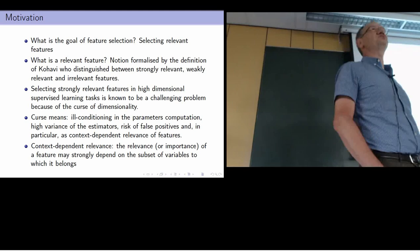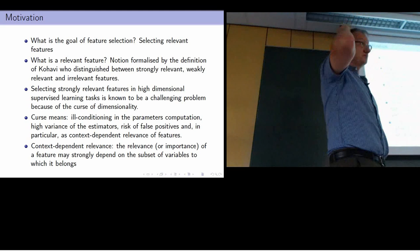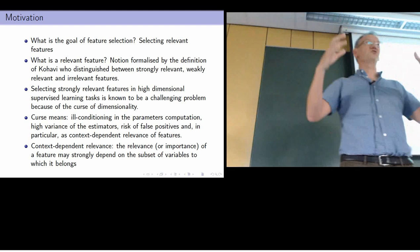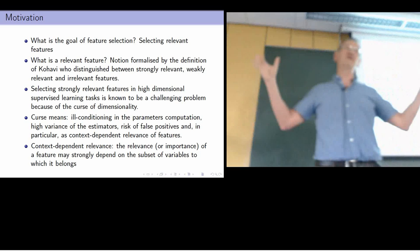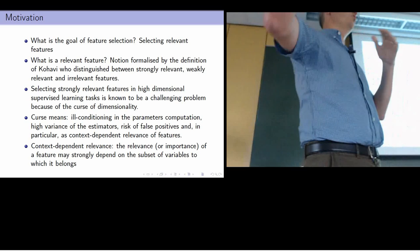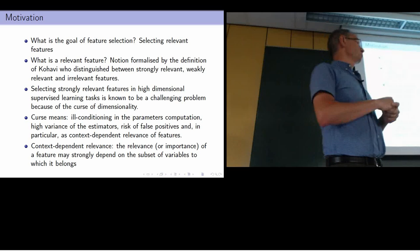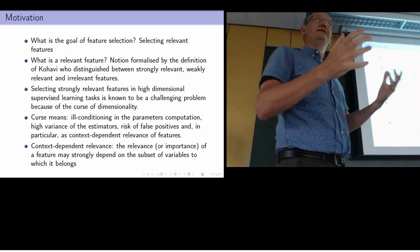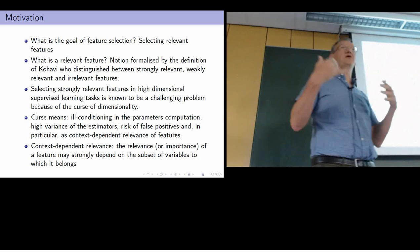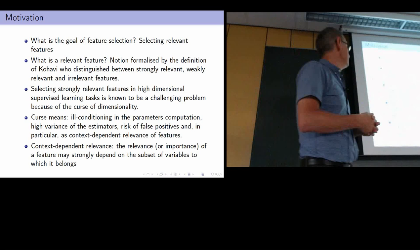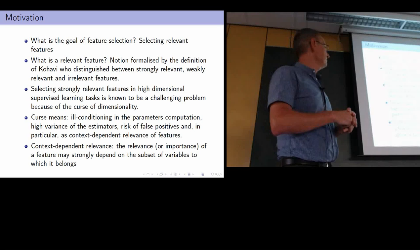The talk is about feature selection. Most of you are aware of the importance of feature selection in data science and machine learning. As shown before by Benjamin, you could have a lot of variables — if you have genes you want to correlate or explain some variability — and so you would like to select only the important features. The goal of feature selection is selecting relevant features, and the question is: what is a relevant feature?